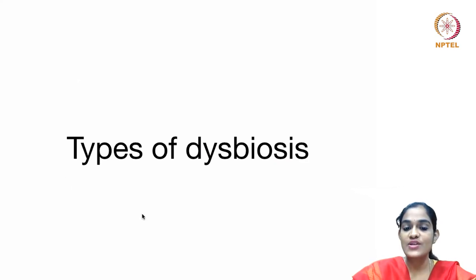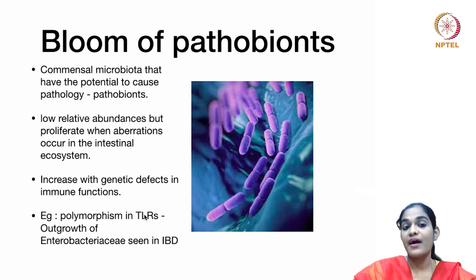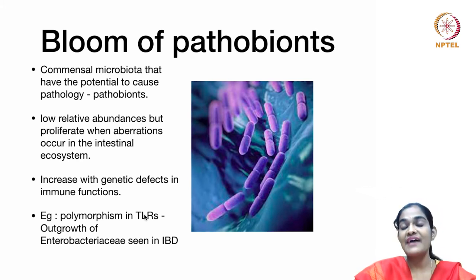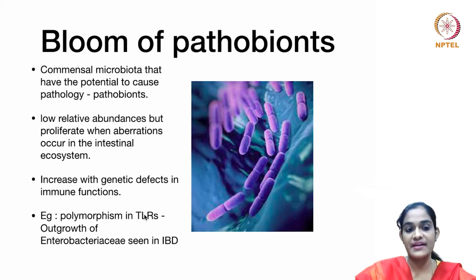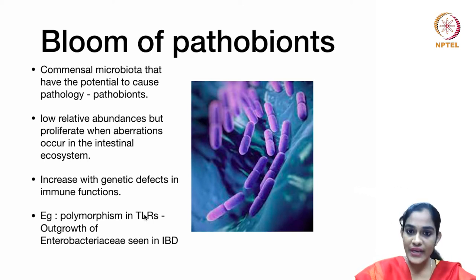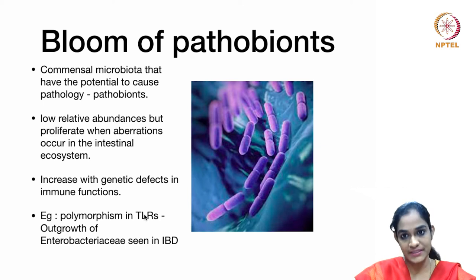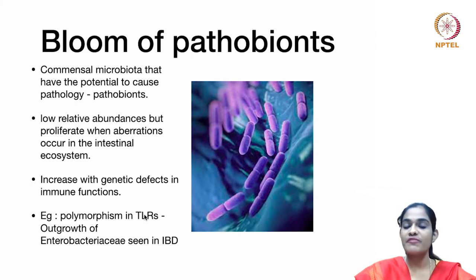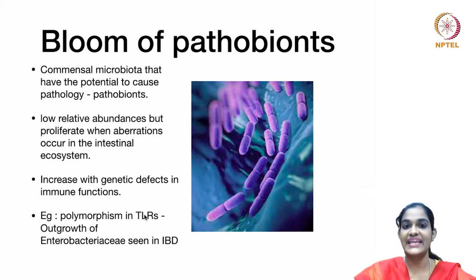The first category of dysbiosis is the bloom or expansion of pathobionts — commensal microbiota that have the potential to cause pathology. Usually these organisms are less abundant but proliferate when there is abrasion in the intestinal ecosystem such as infection or inflammation, and also with genetic defects in immune function. For example, a polymorphism in toll-like receptor leads to an outgrowth of pathological proteolytic bacteria such as Enterobacteriaceae, causing colitis as seen in inflammatory bowel disease.